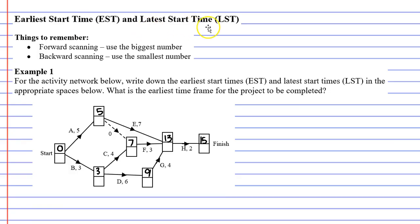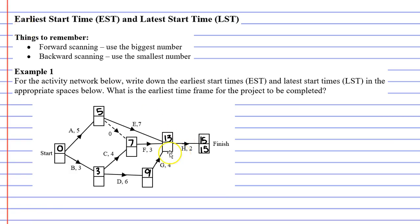Now we move on to latest start times. When you have your finishing vertex, it will have the same earliest start time as its latest start time. We use a method called backward scanning — you start at the finish vertex and work backwards to the start vertex. We want the project to finish after 15 hours, and activity H takes 2 hours, so the latest start time here is 13. That is, 15 minus 2 gives 13. If we start activity H any later than 13 hours, we're going to delay the project.